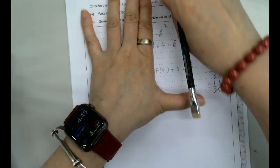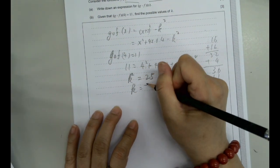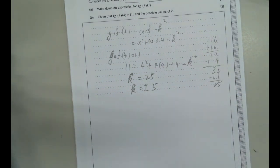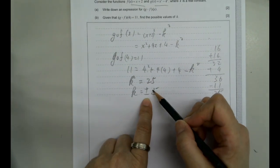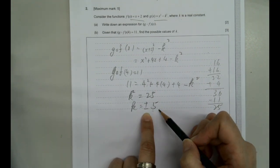Nearly forgot the square. Devil's in the details. So k should equal plus or minus 5. I think the trap is people might have forgotten the plus or minus there. So be very careful with those.